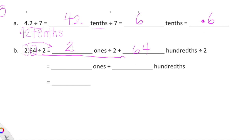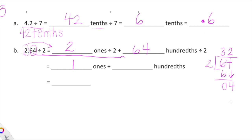2 ones divided by 2 is 1. Now let's think about 64 hundredths divided by 2. If it isn't immediately obvious what 64 divided by 2 is, there's no shame in doing a little long division. 2 goes into 6 three times; 3 times 2 is 6, difference is 0. Bring down the 4 — how many 2s go into 4? Two, because 2 times 2 is 4. So 64 divided by 2 is 32 — keep in mind, this is 32 hundredths.